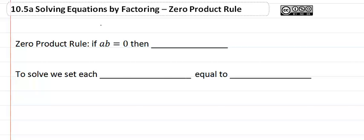10.5a, solving equations by factoring, the zero product rule. The zero product rule just states that if a times b equals zero, then either a equals zero or b equals zero.